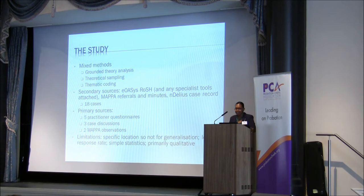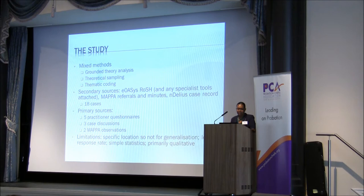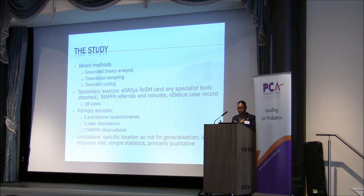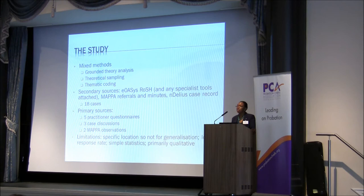I took a mixed methods approach and used grounded theory analysis because I didn't really know what I was going to find — I allowed the data to guide the concepts. The theoretical sampling sought out eligible cases confirmed as registered and managed as Category 3 offenders within London and serving community sentences: community orders, suspended sentence orders, and in one instance a youth rehabilitation order. Thematic coding used information and phrases from those documents, identified patterns, made links with the literature, and developed more abstract understandings. My secondary sources were the electronic OASIS risk of serious harm analysis, risk management plans, MAPPA referrals and MAPPA minutes, and national Delius case records.